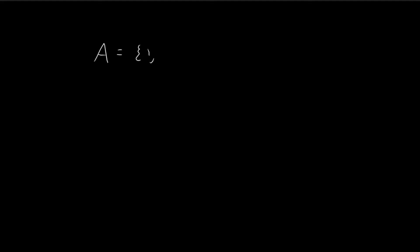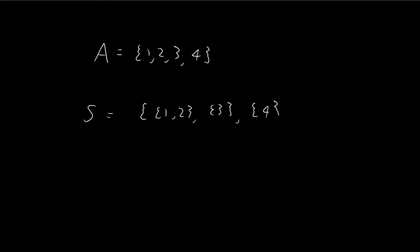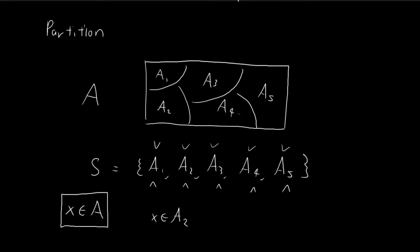Here's a quick example to illustrate the idea of a partition. Suppose A is a set consisting of the numbers 1, 2, 3, and 4. We can construct the set S consisting of the sets {1}, {2}, {3}, and {4}. S is a partition of A because for every single element in A, it belongs to exactly one of the sets in S.